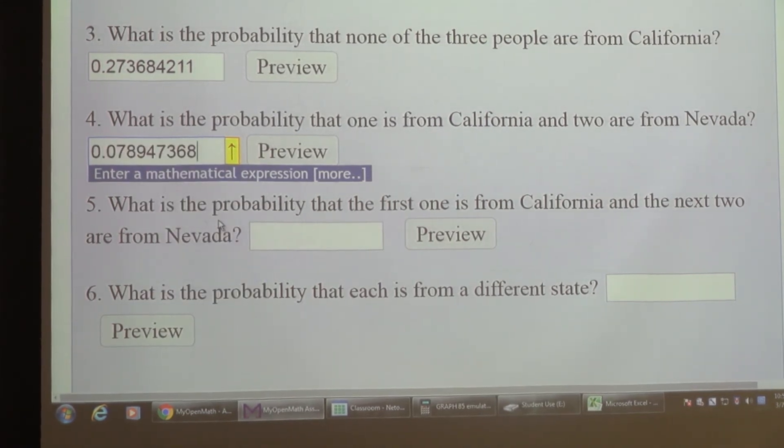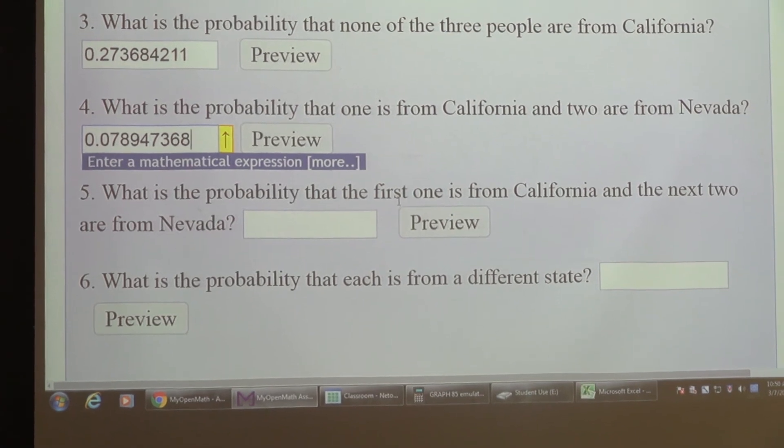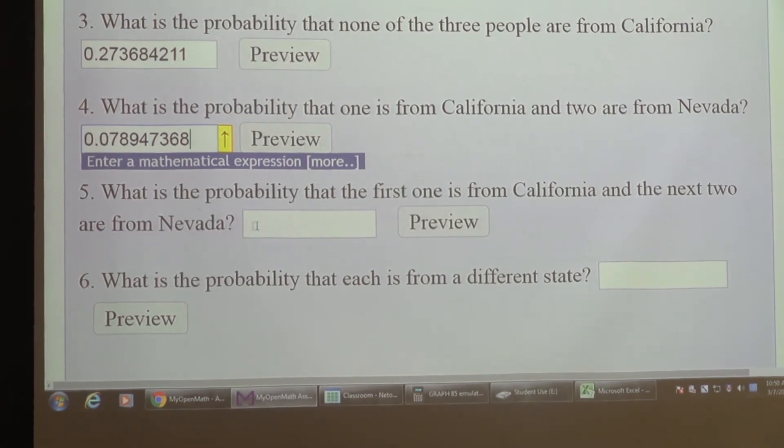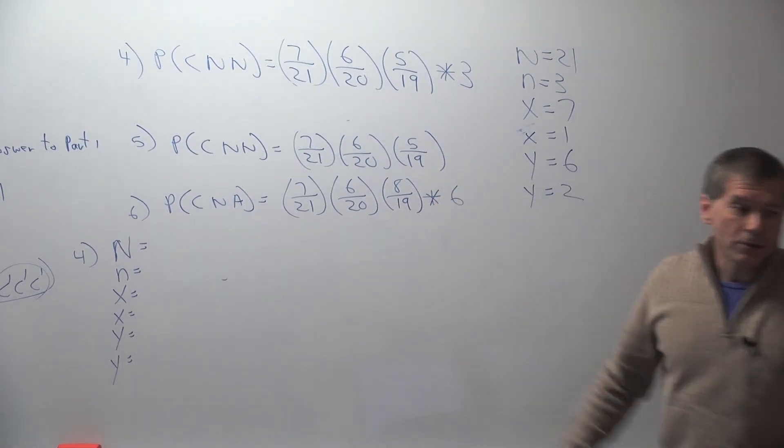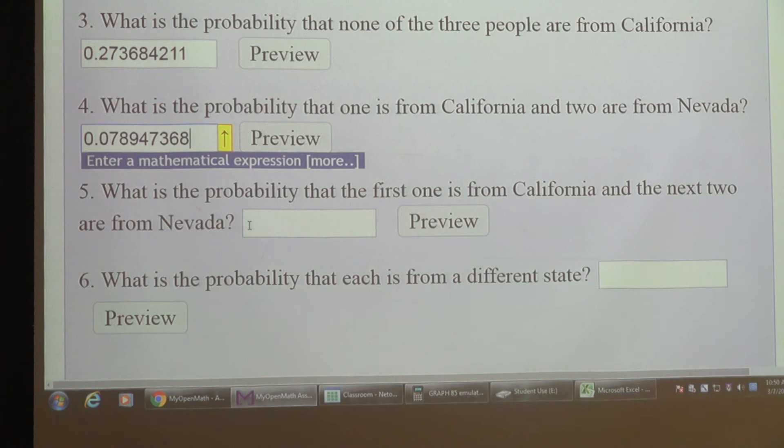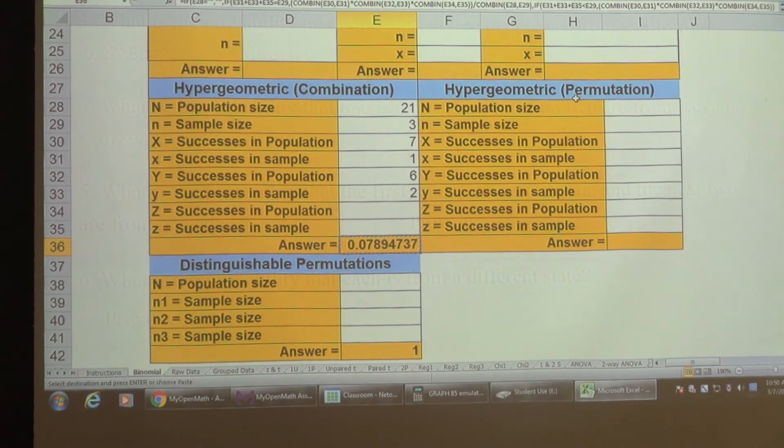I wanted to point out this one right here. On five, it says, what is the probability that the first one is from California and the next two are from Nevada? That's the same exact numbers, but on this one, a specific order was given. When a specific order is given, such as problem five, then you have to do that in the hypergeometric permutation area.